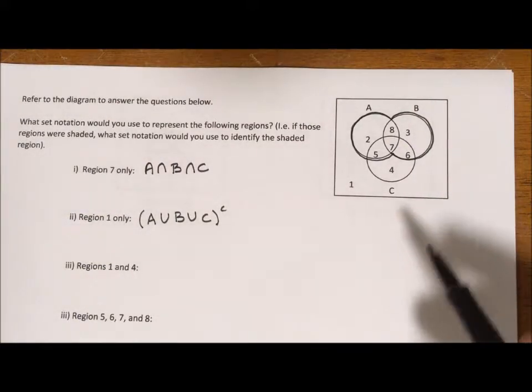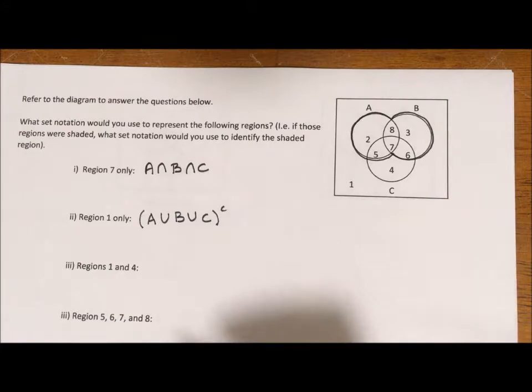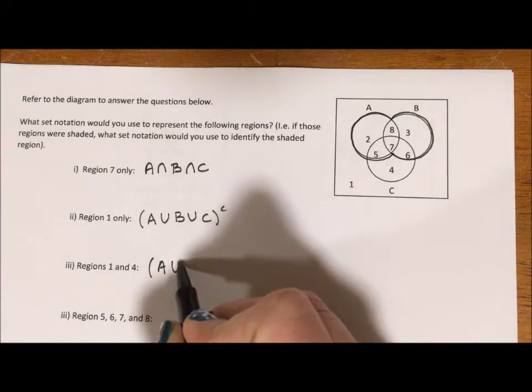So the way I'm going to do 1 and 4 is I'm going to say A union B.